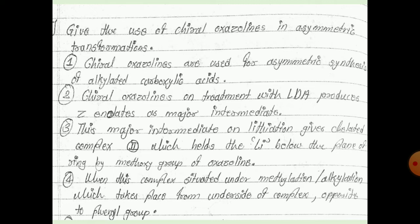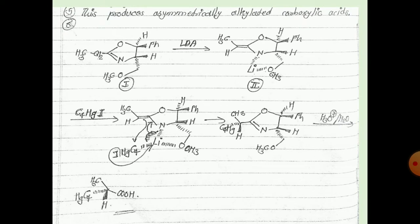The chelated complex is held by the lithium within the ring. When this complex undergoes methylation or alkylation, the reaction takes place from the underside of the complex, opposite to the phenyl group, producing asymmetrically alkylated carboxylic acid.